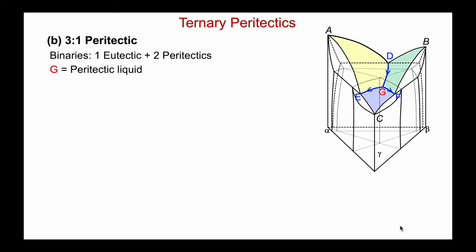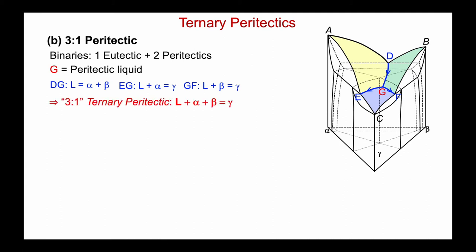Let's color in the primary phase fields — again three of them: alpha, beta, and gamma. When my liquid is along DG, it's coexisting with alpha and beta of various compositions. Along EG, this is a peritectic reaction: the liquid is outside alpha and gamma, so it's liquid plus alpha in equilibrium with gamma. And GF is also a peritectic: the liquid lying outside beta and gamma gives liquid plus beta equals gamma. Where the three meet, we have a three-to-one ternary peritectic, with the reaction: liquid plus alpha plus beta in equilibrium with gamma.